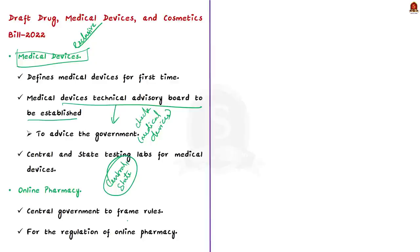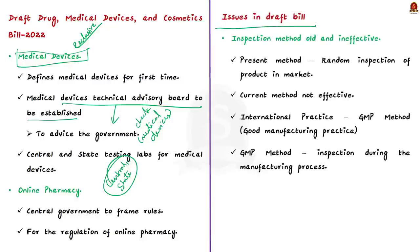Now let us see the issues in the draft bill highlighted by the author. The author feels that although the bill introduces some provisions regarding medical devices and online pharmacy, the bill fails to address the issues in regards to drug regulation — there is nothing new in this bill regarding drug regulation. This is why the op-ed article is aptly titled 'A new legislation that mirrors the old.' The first issue: presently under the Drugs and Cosmetics Act 1940, drug inspectors pick up random drugs from the market and test their efficiency. If the drug is found not up to standards, the manufacturer is prosecuted. This method is faulty at its core as there is a huge room for error.